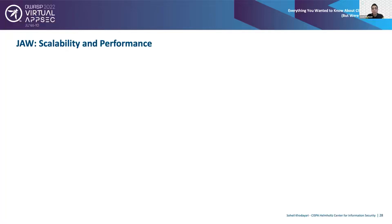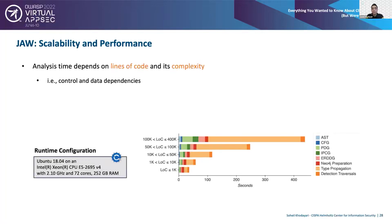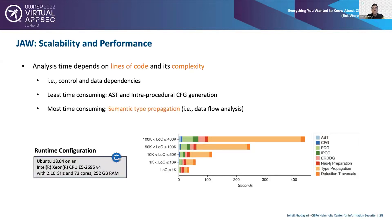For scalability and performance, analysis time is in direct correlation with lines of code and their complexity — the number of control and data flow dependencies. The least time-consuming operations are AST and intra-procedural control flow graph generation, while the most time-consuming operation is semantic type propagation — essentially the data flow analysis. The runtime can go as high as around 400 seconds per web page.